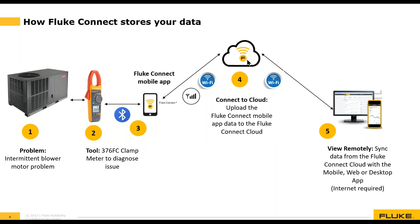If the cell phone is out of range, the data will be stored on the phone until it reconnects to either a cell signal or a Wi-Fi signal. In step five, users can then access their Fluke Connect cloud data via any web-enabled device, such as a web browser, the mobile app, or our desktop software.